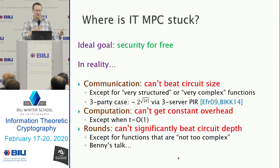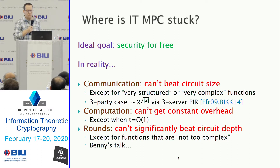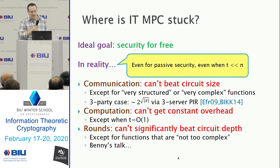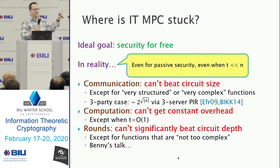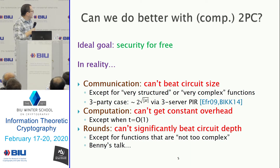What we do get from BGW-style protocols is round complexity proportional to the depth of the circuit — more accurately, the number of multiplications on the longest path from input to output. We can shave a bit and get constant-round protocols for a rich class of functions, and Benny will talk about that. These limitations apply even for the easiest setting: passive security, even when the threshold is much less than optimal, even if t is one and n is a million.